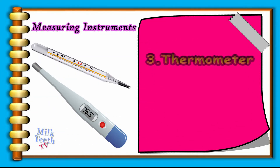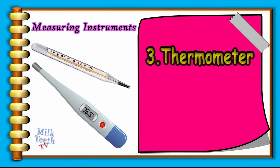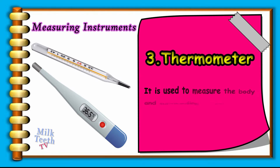Thermometer. It is used to measure the body and surrounding temperature. It uses the units Fahrenheit and Centigrade. It is made up of a liquid metal called Mercury.